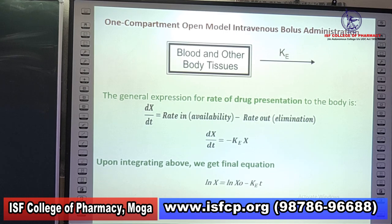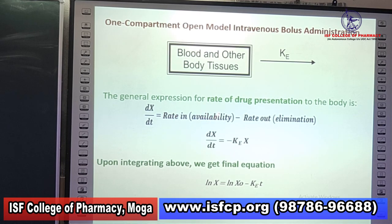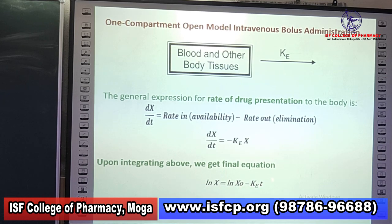This is the first-order elimination rate constant ke by which the drug is being eliminated out from the body. The general expression for rate of drug in the body is dx/dt equals rate in minus rate out, which simplifies to dx/dt = -ke·x, where ke is the first-order elimination rate constant and x is the amount of drug present in the body at any time t. Upon integrating, we get: ln x = ln x₀ − ke·t, where x₀ is the initial amount of drug administered.